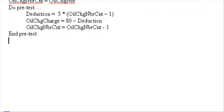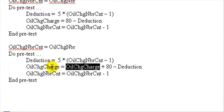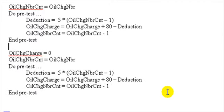Since the value of oil change charge needs to be accumulated, I'll add its name to the equation. Oil change charge is now equal to itself plus 80 minus deduction. The reason we need this is that without it, oil change charge would be overwritten each time through the loop and we'd never accumulate all the charges. Since this is now an accumulated field, I'll also set the variable to zero before the loop to avoid stale values from previous customer transactions.